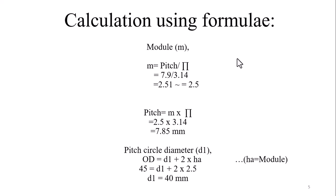Let's start with the module first. Module equals pitch divided by pi. We have calculated the pitch value: 7.9 divided by pi value 3.14, it comes out to be 2.51. Module 2.51 is difficult to consider, so we'll round it off to 2.5.